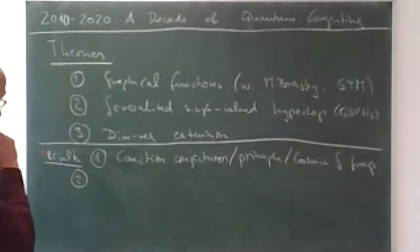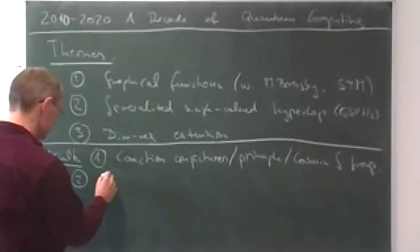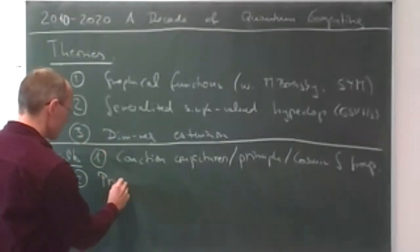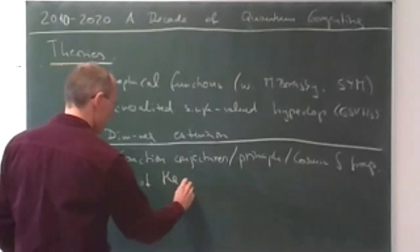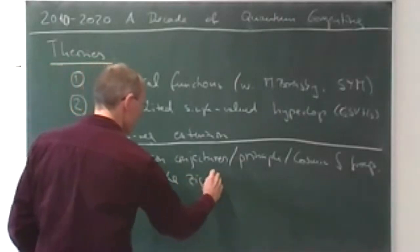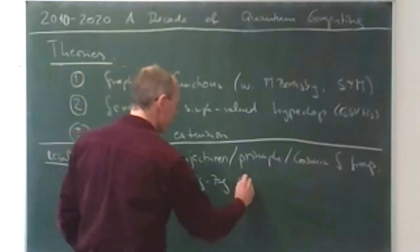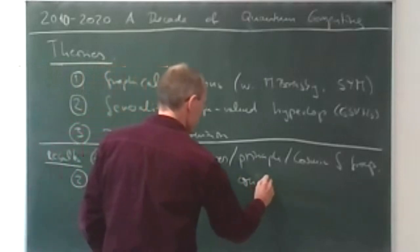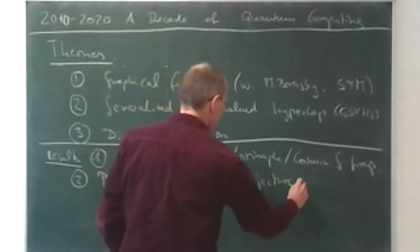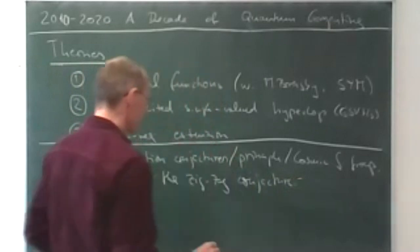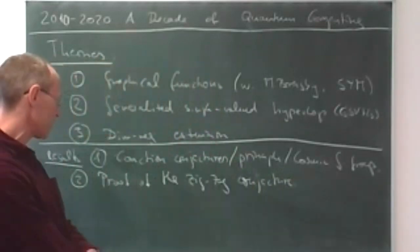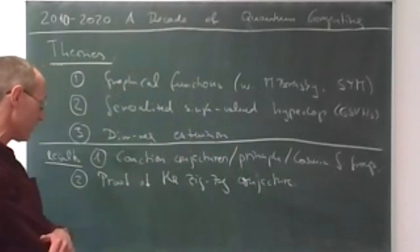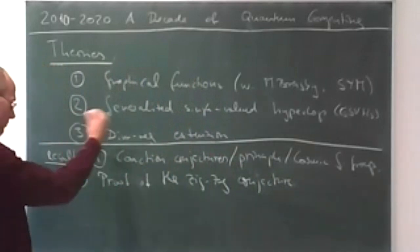Sometimes you can prove something. There's the proof of the zigzag conjecture — a conjecture by David Broadhurst and Kreimer — and it took 17 years to prove it. So you can really do some mathematics.